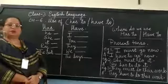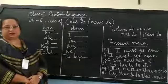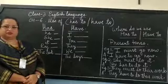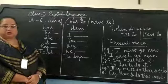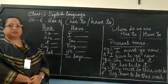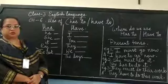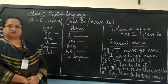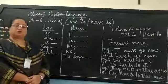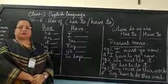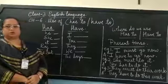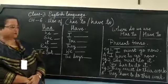Hello everyone, welcome to another class of English language for class 3. Today we are going to do chapter 6, the use of has to and have to. So first of all, let us understand where we use these words.